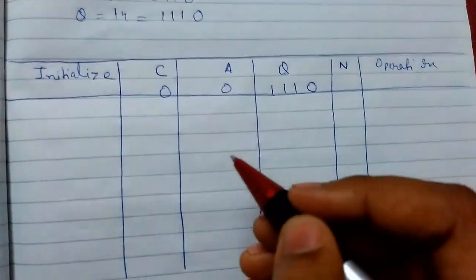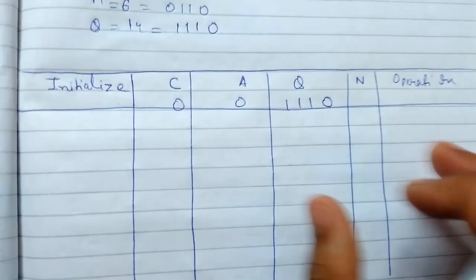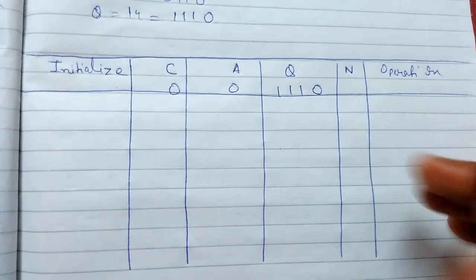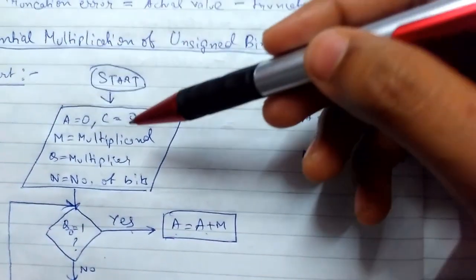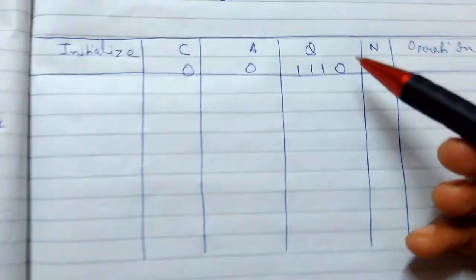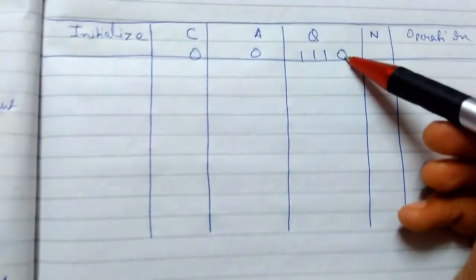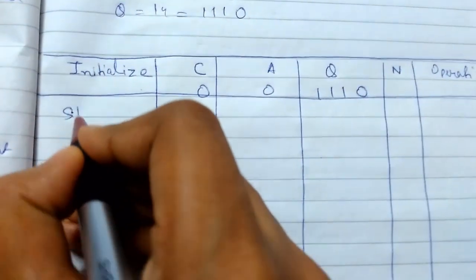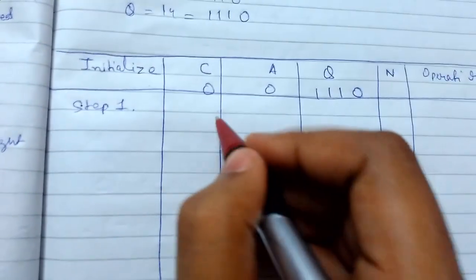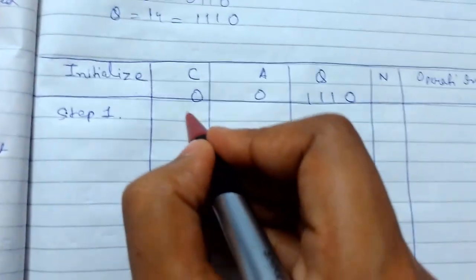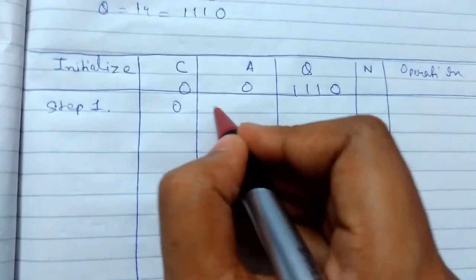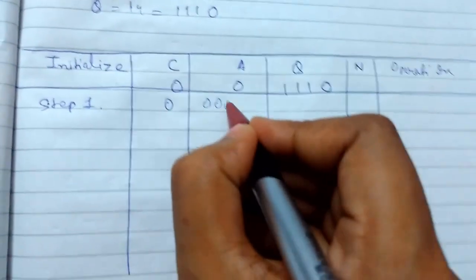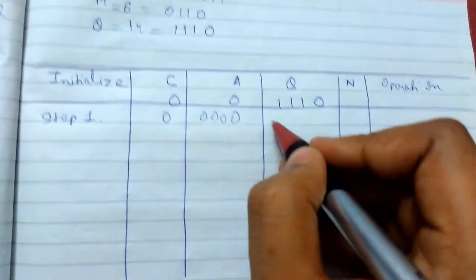I've made a table to keep things compact and easy to understand. Initially, A and C are set to 0. Q0 is the least significant bit of Q, which I'll be checking at each step.